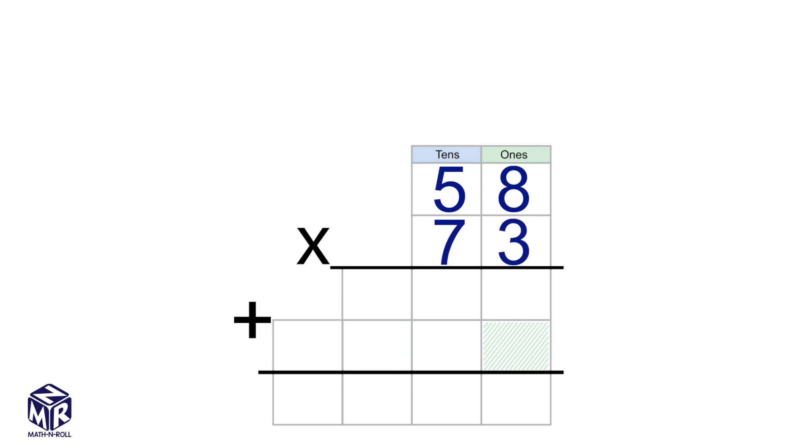58 times 73. First, we have to multiply 58 by 3. We multiply the ones. 8 times 3 equals 24. 24 doesn't fit into the ones place, so we put the 4 in the ones place and we carry the 2 to the tens place.